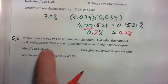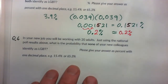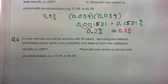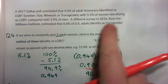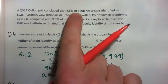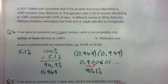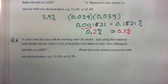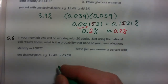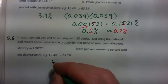Question 6: in your new job you'll be working with 20 adults. Using the national poll results, what is the probability that none of your new colleagues identify as LGBT? Question 6 doesn't specify men or women — just adults — so we use 4.5% of adult Americans identifying as LGBT. That's the percentage we need.